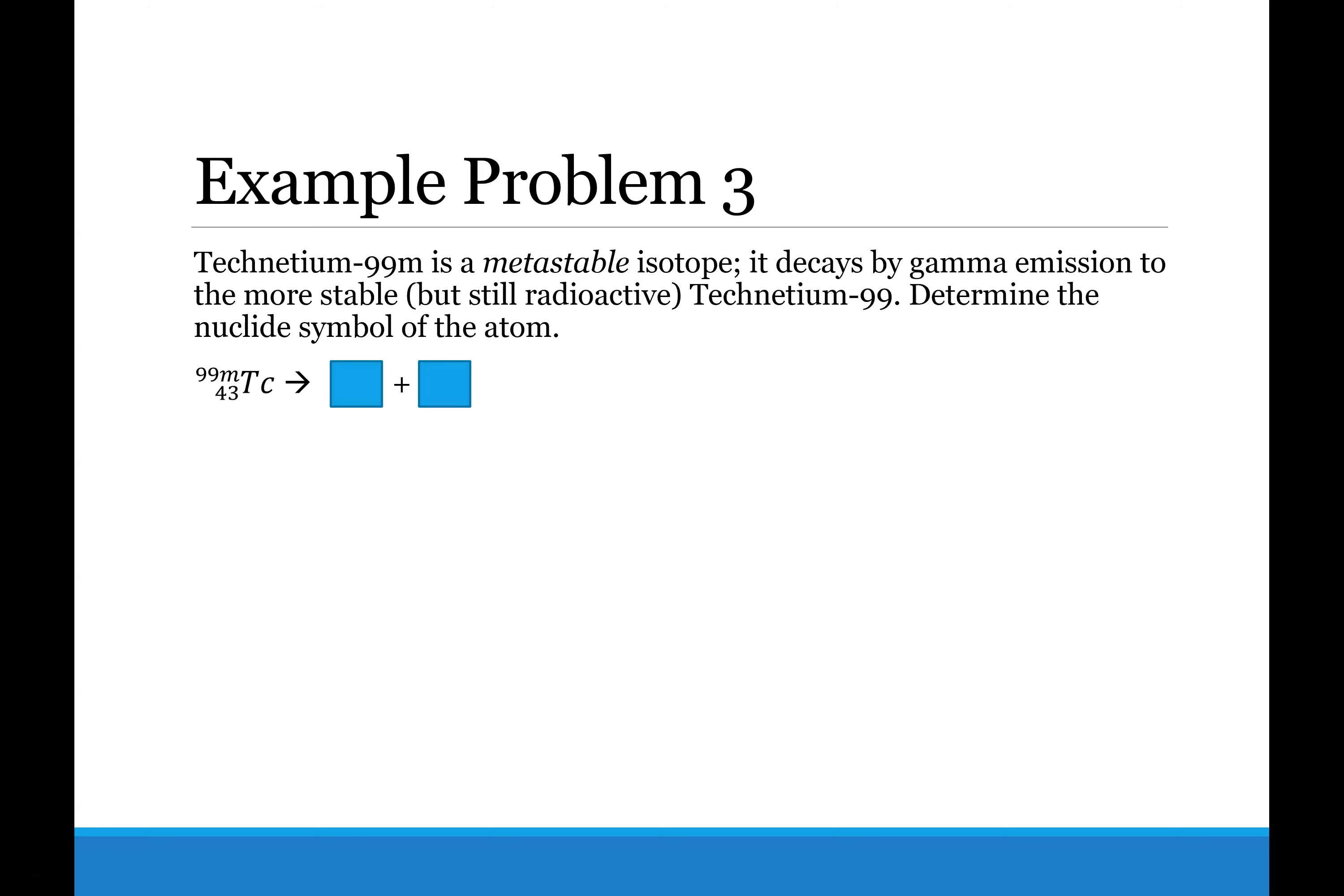So the formula for gamma decay is going to be the initial AXZ with a little star because they're typically metastable when they decay. You have the decay itself happen and then you end up with AXZ that is not metastable plus the gamma ray.